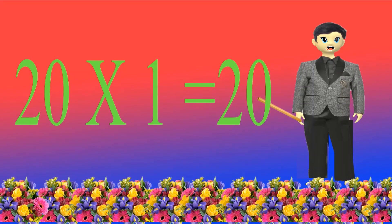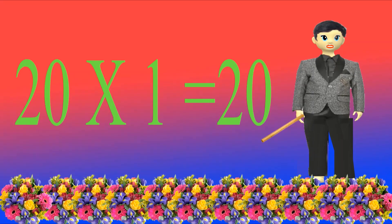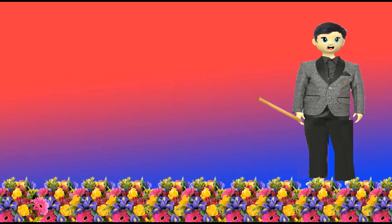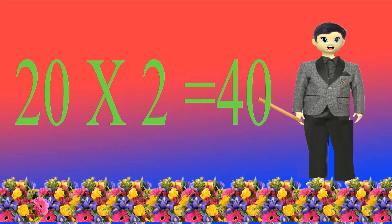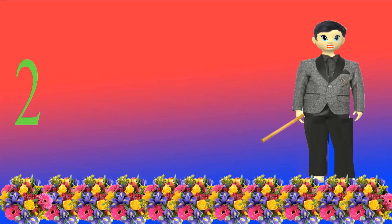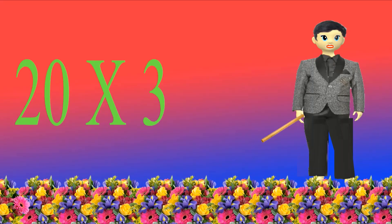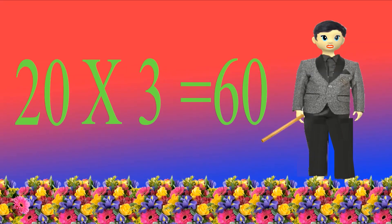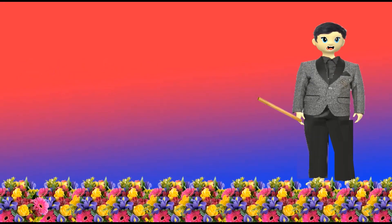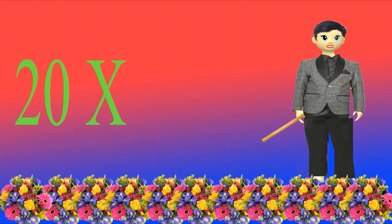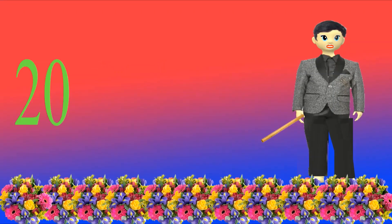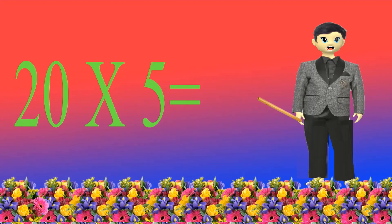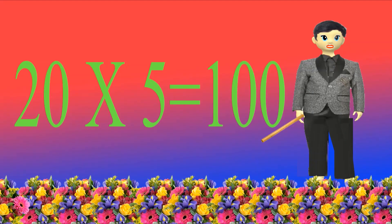Twenty table. Twenty ones are twenty. Twenty twos are forty. Twenty threes are sixty. Twenty fours are eighty. Twenty fives are one hundred.